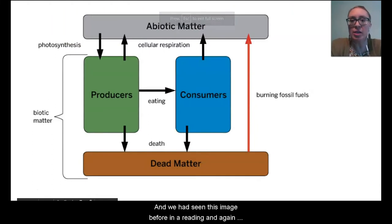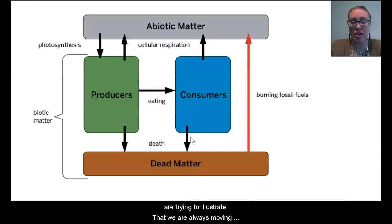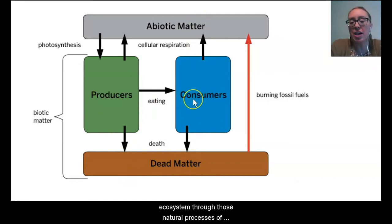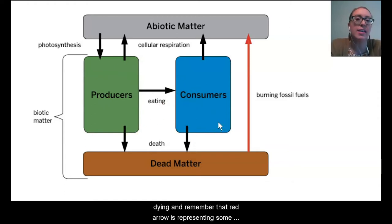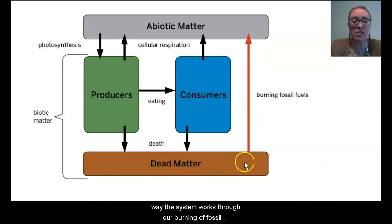We had seen this image before in a reading, and it's reminding us of what these two key concepts illustrate — that we are always moving carbon among the components of the ecosystem through the natural processes of photosynthesis, cellular respiration, eating, and dying. The red arrow represents human interaction and adjustments to the way the system works through our burning of fossil fuels.